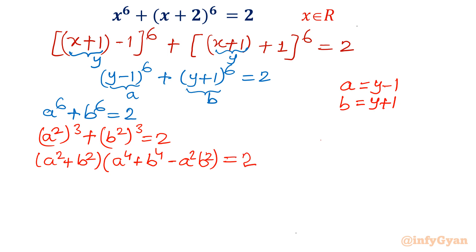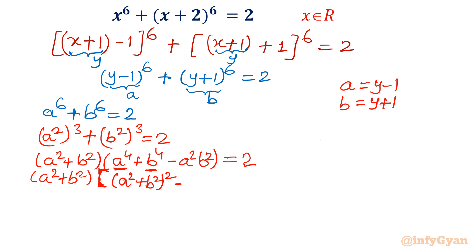Next, I write a⁴+b⁴ in terms of (a²+b²)². We know (a²+b²)² = a⁴ + b⁴ + 2a²b², so a⁴+b⁴ = (a²+b²)² - 2a²b². What is required here is -a²b², so writing it as (a²+b²)² - 3a²b² gives the correct expression after cancellation.